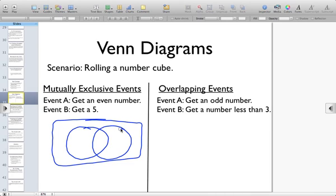One circle is going to represent event A, and the other circle represents event B. Any outcome that would fall into event A would go in the inside circle, and event B would go in the B circle. For our number cube, we have 1, 2, 3, 4, 5, 6. So 1 is not an even number or a 5, so it's going to be on the outside. 2 is an even number, 4 and 6, and 5 is event B.